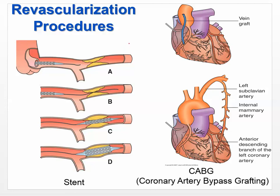There are revascularization procedures: you can put in a catheter and install a stent, or use balloon angioplasty to open up the blockage. There's also something called a CABG — coronary artery bypass grafting — usually used when more than one coronary vessel is involved. You bypass that area and directly provide blood flow to the area that's being damaged.